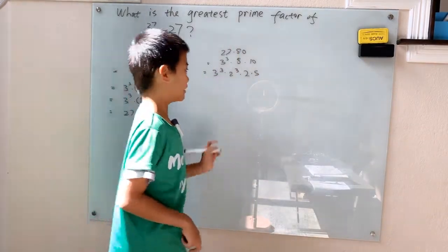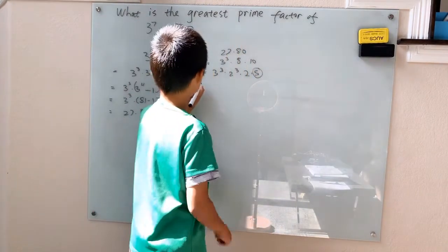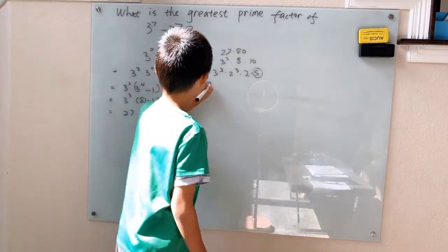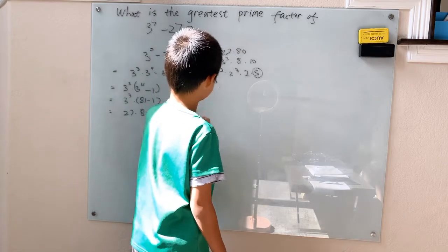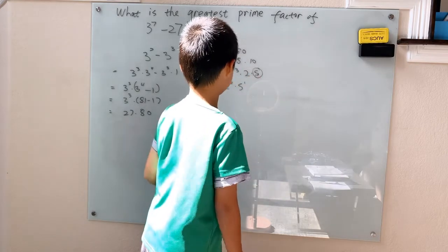To see, our answer is 5, even though we can compute this prime factorization a little bit more. Let's see, 2 to the 4th times 5 to the 1st, and our answer is still 5.